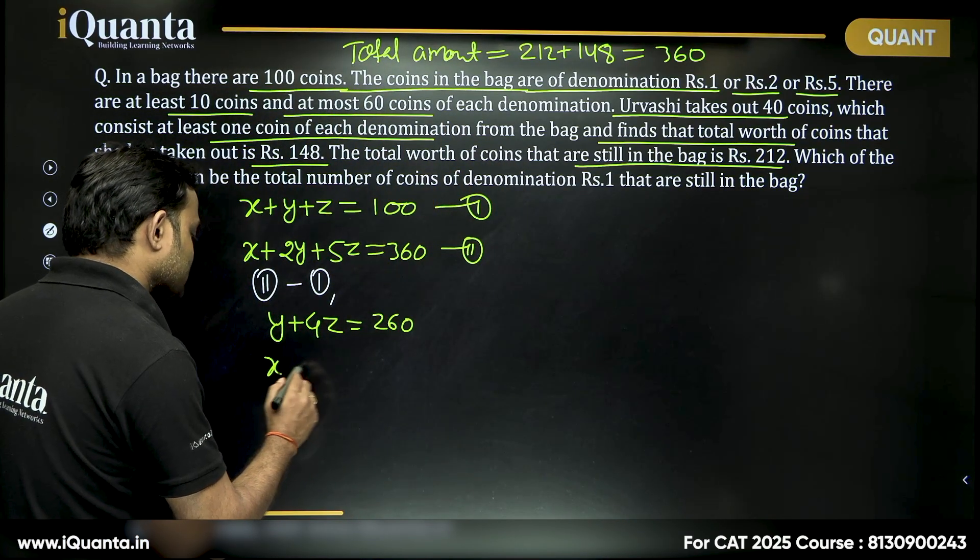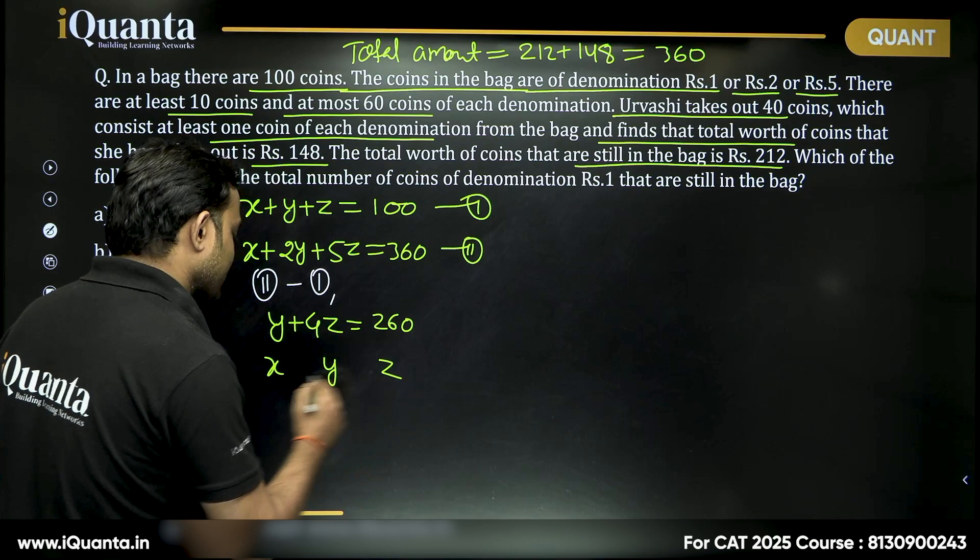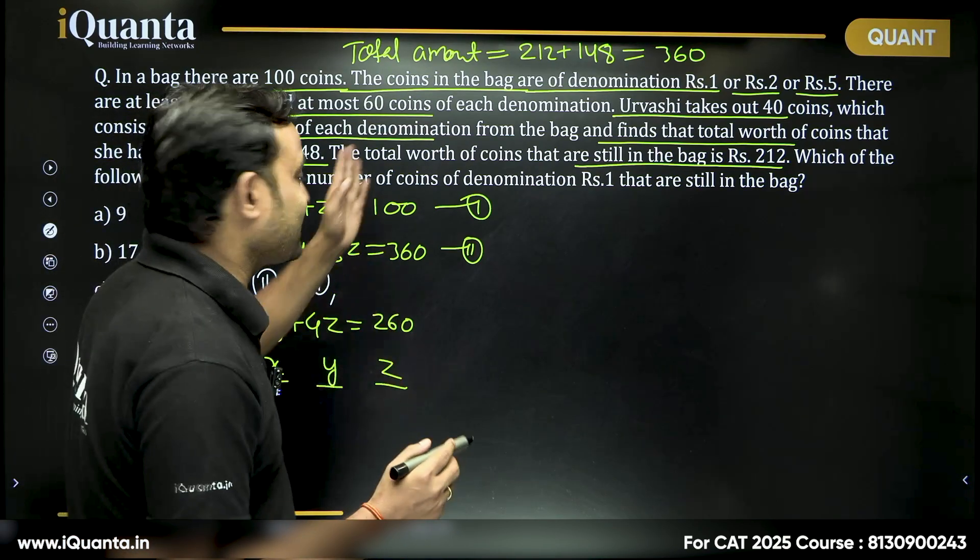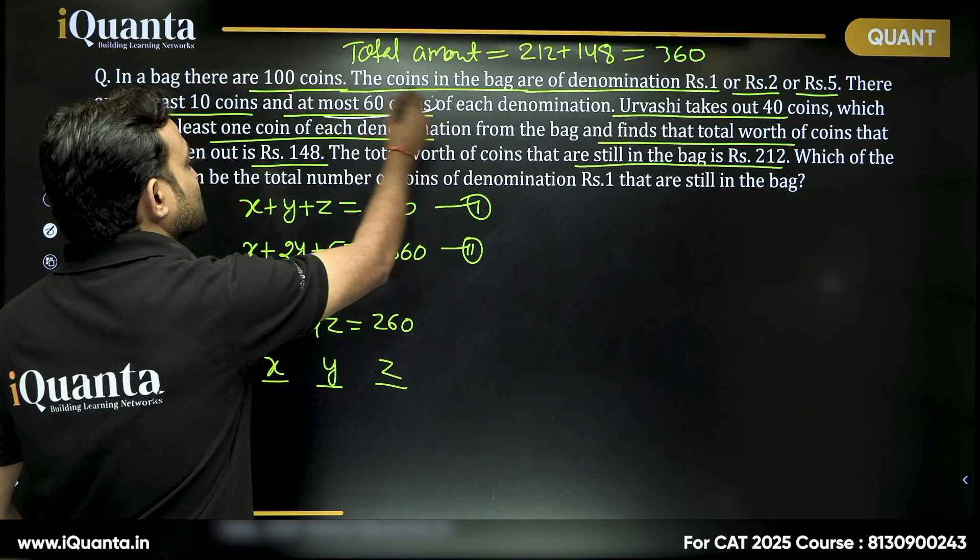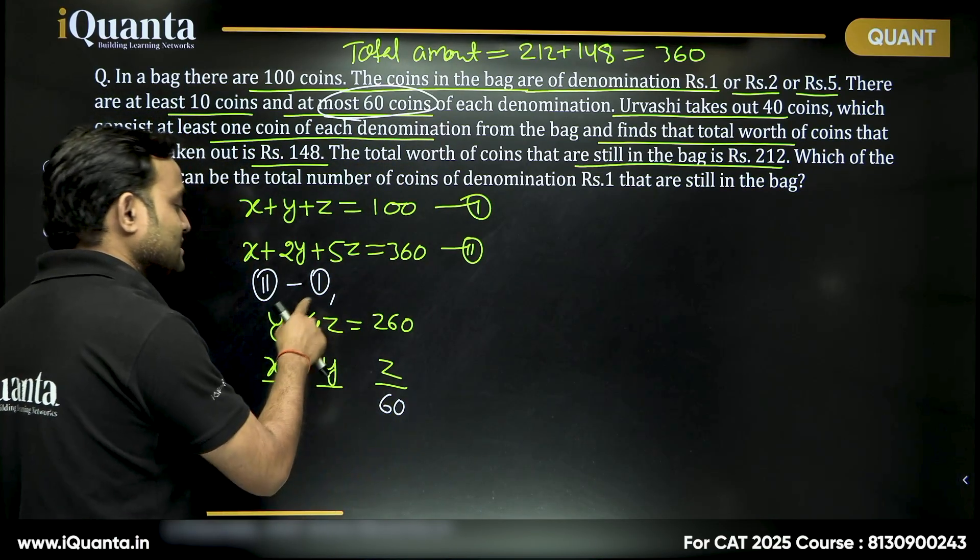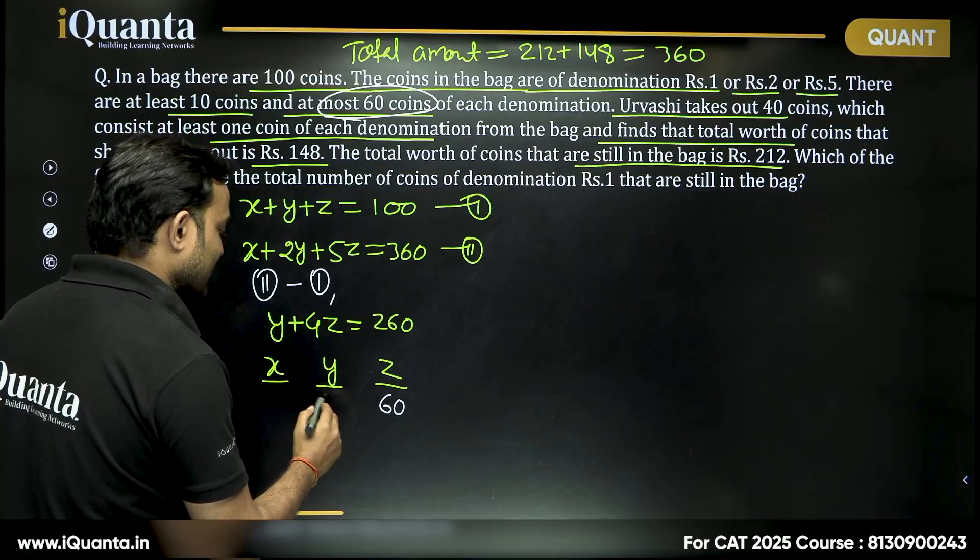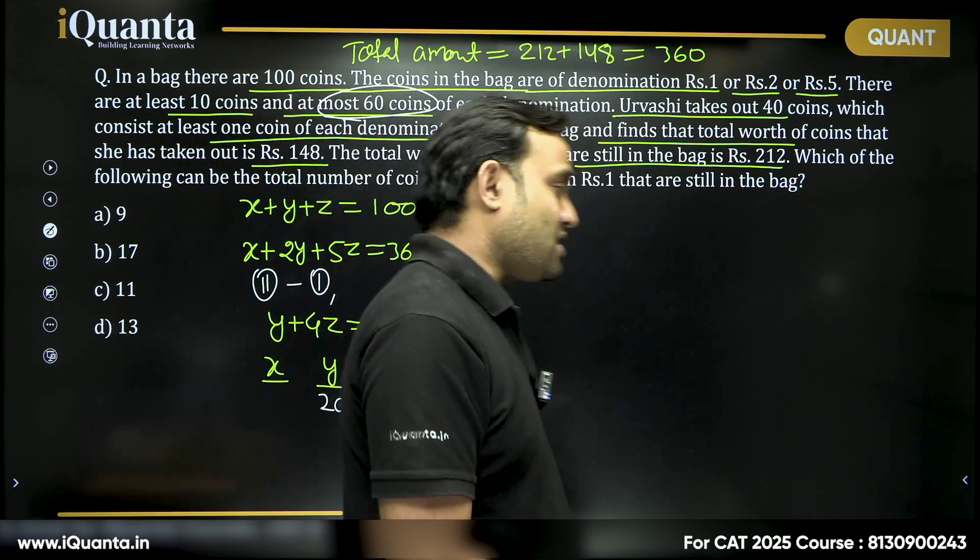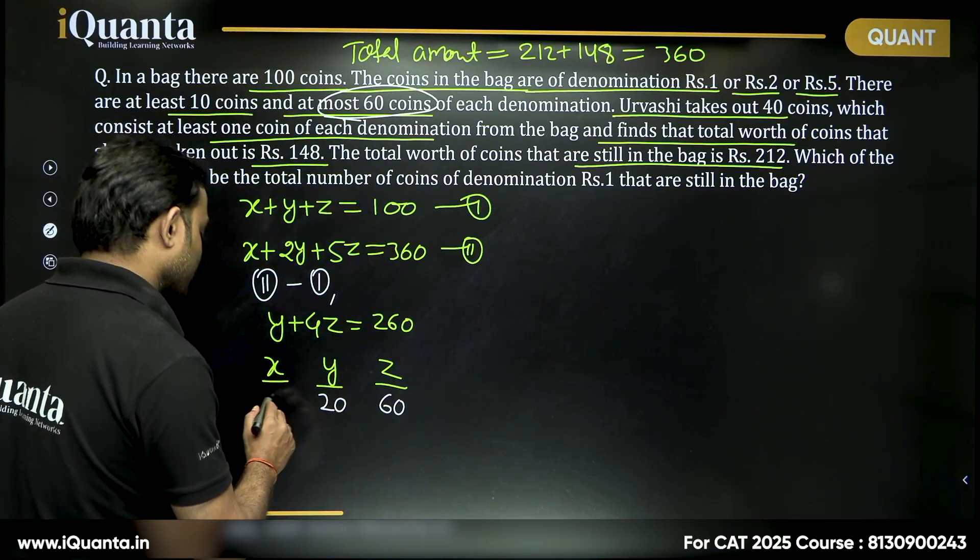What we can say about x, y and z here? The maximum value of z that I can take is 60. At most 60 coins. If I am taking z as 60 this will become 240. In that case y will be 20. x plus y plus z is 100. Can I say x will be 20 as well?